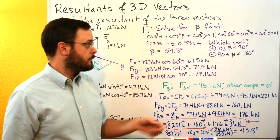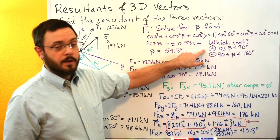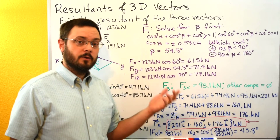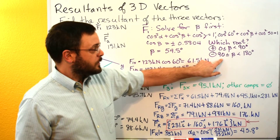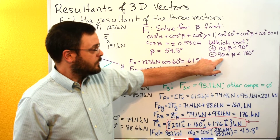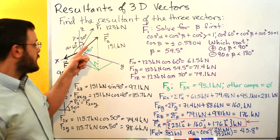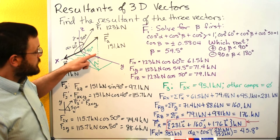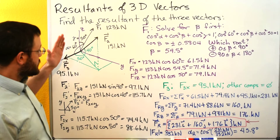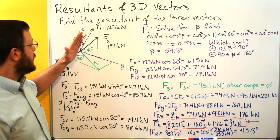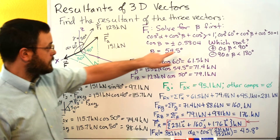We have to decide whether to use the positive or negative root. The positive root gives an angle between 0 and 90 degrees — cosine of 0 is 1, cosine of 90 is 0. A negative value gives an angle between 90 and 180 degrees. We look back at our diagram and decide whether the vector is closer than 90 degrees to y or further away. It looks like it's closer than 90 degrees to y, so we take the positive root, giving us beta equal to 54.5 degrees.